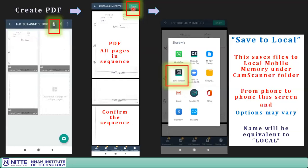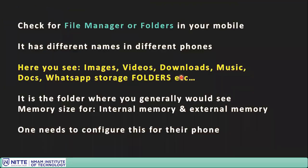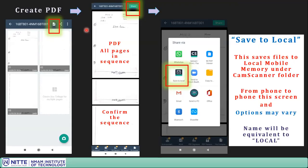Now click Share, but this is a very important step: you must store the PDF in your mobile memory. Do not share it to Google Drive or anything else — a Google Drive link cannot be uploaded to Moodle. When you click Share, a window pops up. Look for the option 'Save to Local' — the keyword is 'local'. The icon may differ on different mobiles, but look for that keyword.